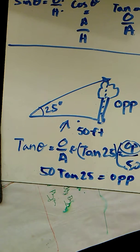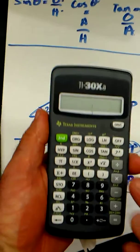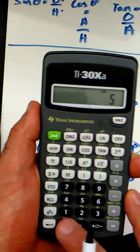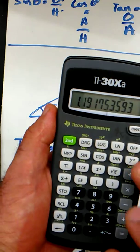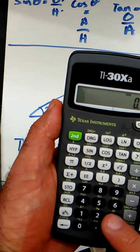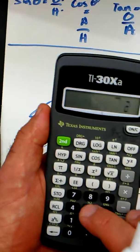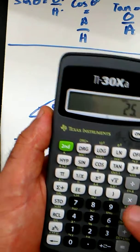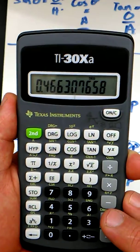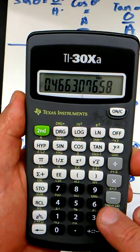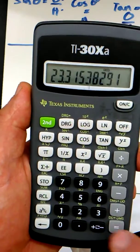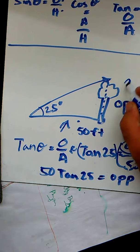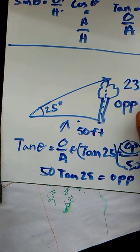So let's do that here in the calculator. 50. So tangent 25 equals 0.466. Multiply that by 50. You get 23. So that opposite side is about 23 feet.